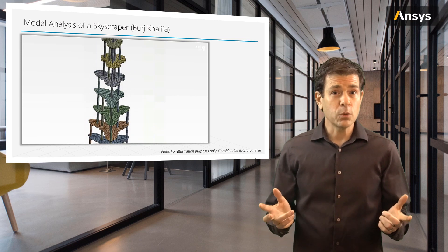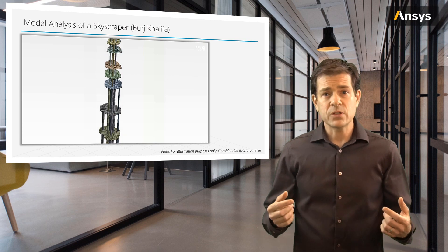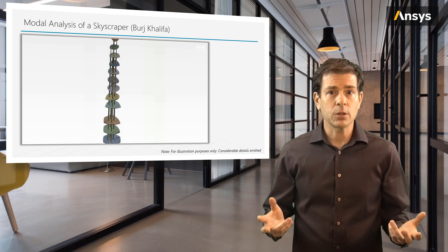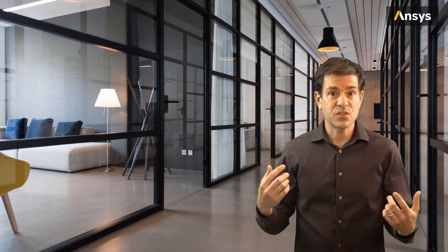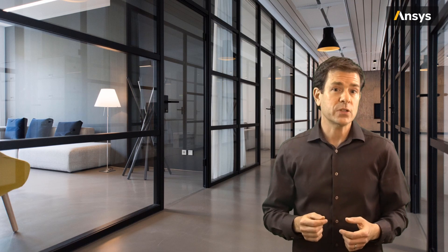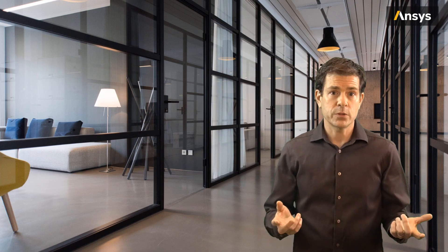Considerable details have been omitted. In the detailed model, there would be representation of all the walls and all the columns, as well as any mass that may not contribute to the stiffness of the building, such as equipment and non-structural features like finishing. All the stiffnesses and mass from the elements that make up the complex construction of the building go into the stiffness and mass matrices of the eigenvalue problem, and we solve for the mode shapes and the modes.